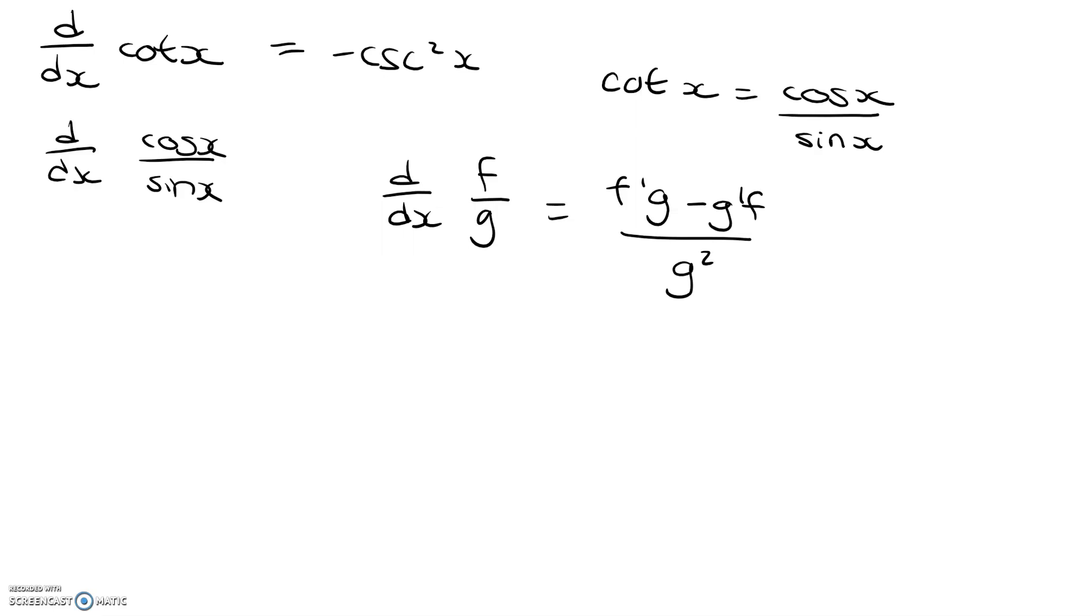So let's apply this to cosine x over sine x. To do that, we have to know that the derivative of cosine x is equal to negative sine x, and that the derivative of sine x is equal to cosine x. Okay, now that we've gotten all of that out of the way, let's go ahead and apply this to our cosine x over sine x.